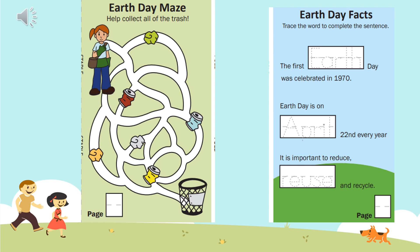When you're done, come to the next page where it says 'Earth Day Facts.' Go down to the bottom of the page where you see the word 'page' and the empty box — this is page number three, so write the number three in that box. Then come back up to the top. We're going to fill in the empty blanks. The words have already been dotted in for you, so you can just trace the words. I'm going to read it so you can follow along with your finger.